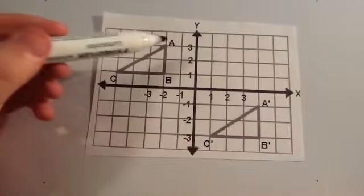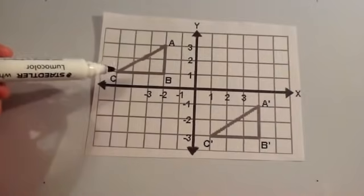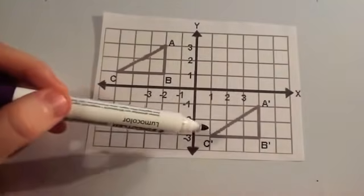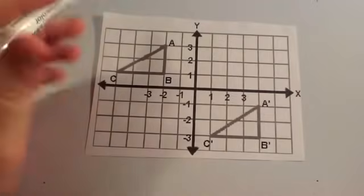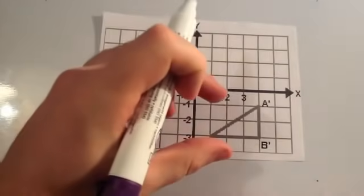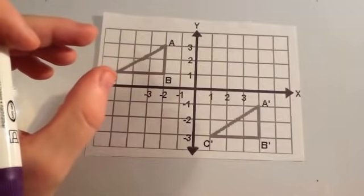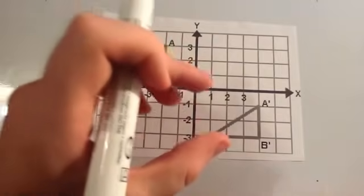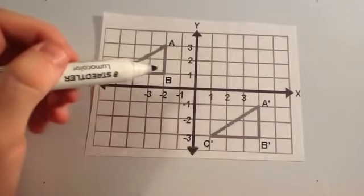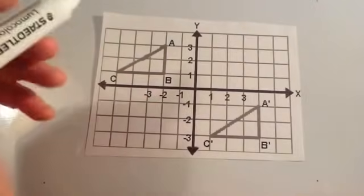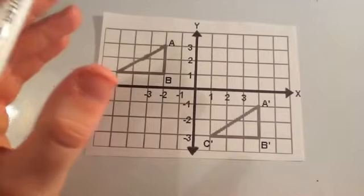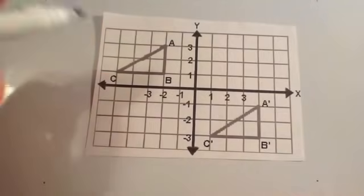Okay, so here we've got an object, ABC, and we've got the image, A prime B prime C prime. And the question says that this shape has been moved to give you this shape, and the question says, describe the translation from how to get from this shape to this shape. So as you can see, it's been slid, it's been moved across the grid without a rotation or reflection, so it's definitely a translation.